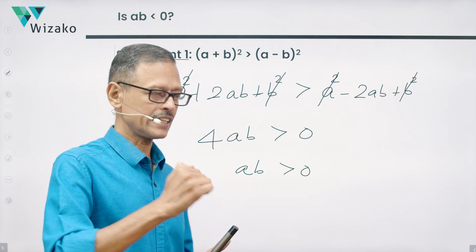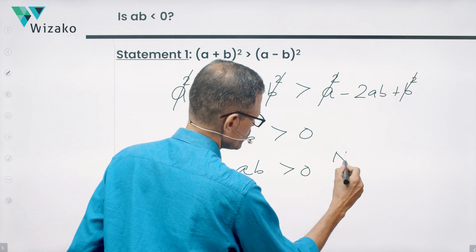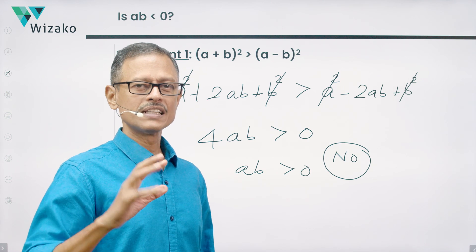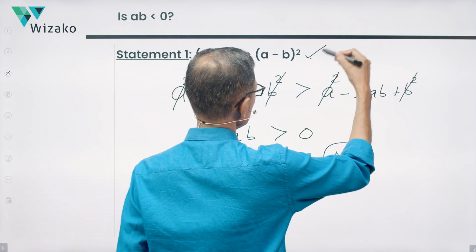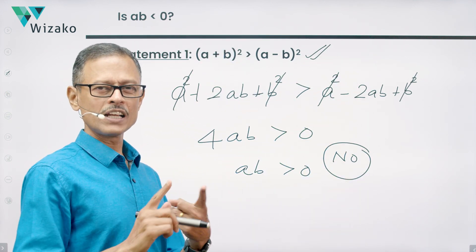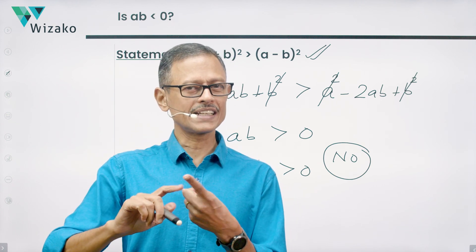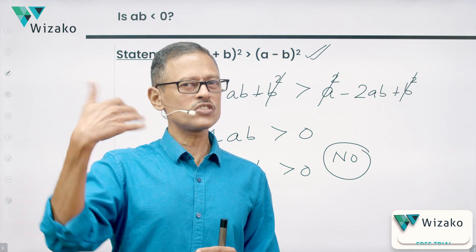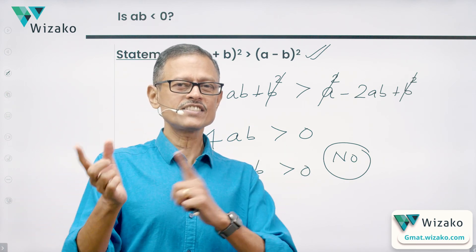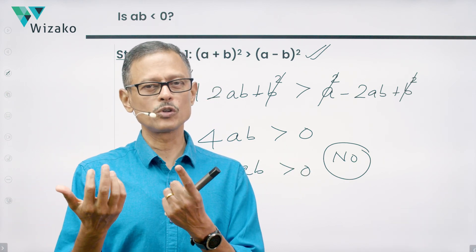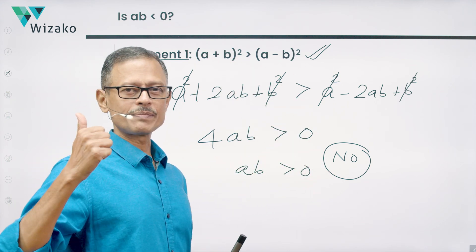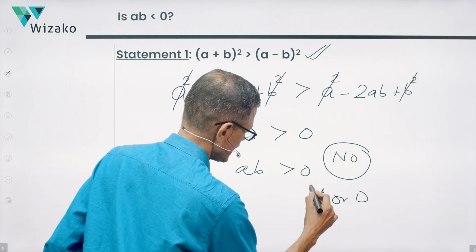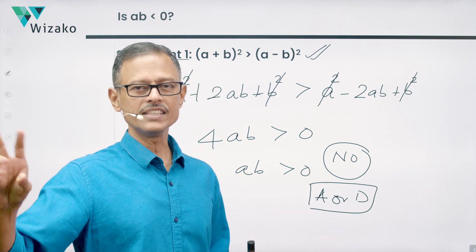What statement 1 tells us conclusively is that AB is greater than 0. If AB is greater than 0, then it is not negative. We have a definite no as the answer. If you have a definite answer, even if it's a no, then the data is sufficient, which means that statement 1 alone is sufficient. If 1 alone is sufficient, it could so be that statement 2 is not sufficient. In that case, the answer will be an A. Or statement 2 also can be sufficient, in which case each statement is independently sufficient. So the answer could be a D. So in any DS question, if you realize statement 1 is sufficient, then our answer options are going to be one of these two, A or D. We can strike off the remaining three, B, C, E.